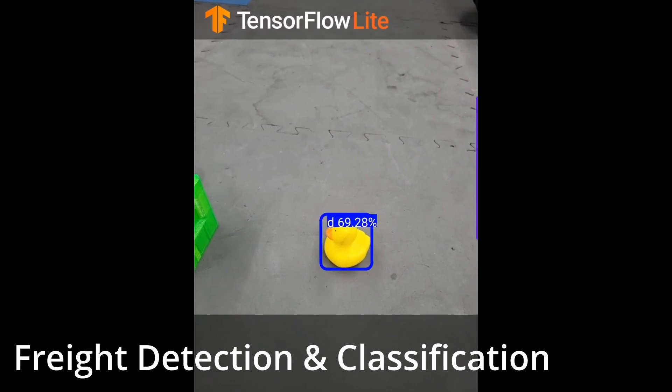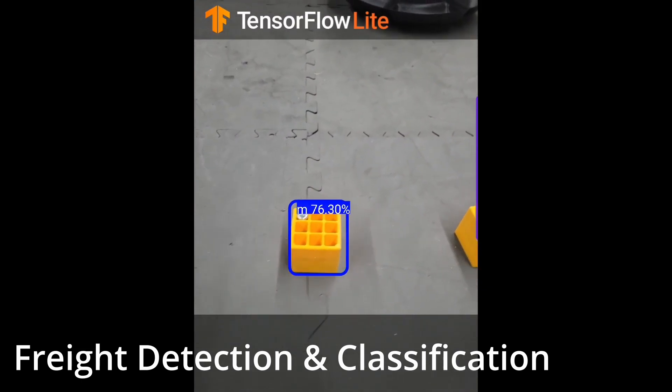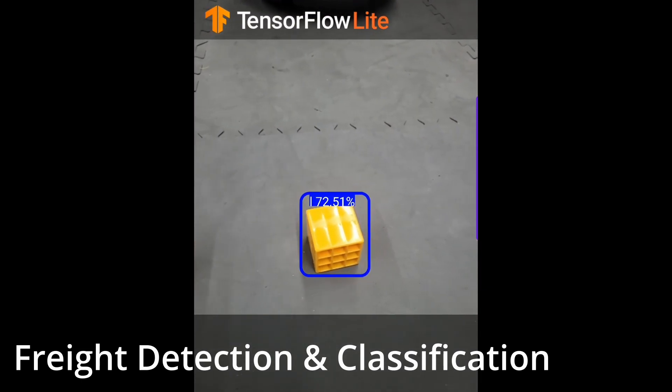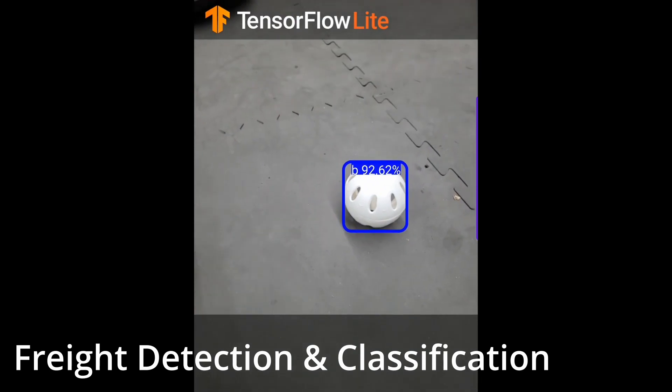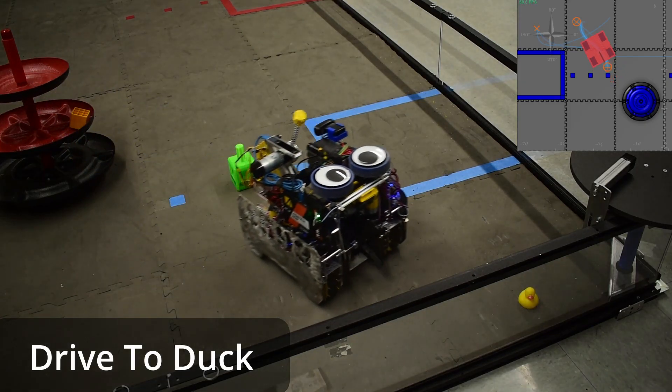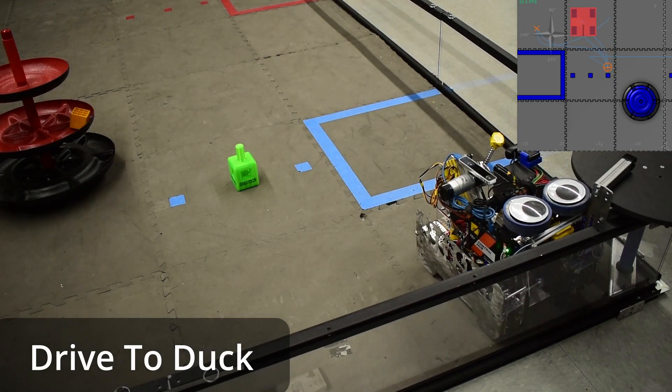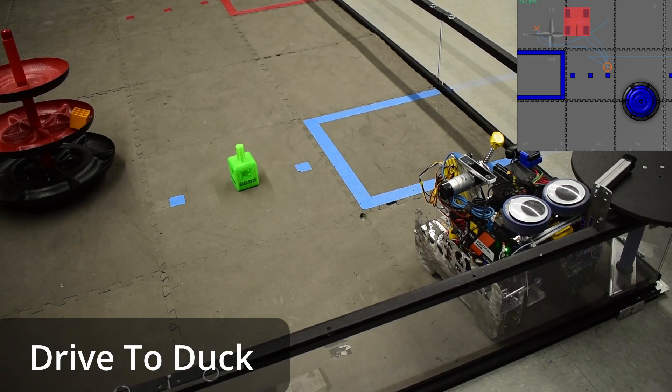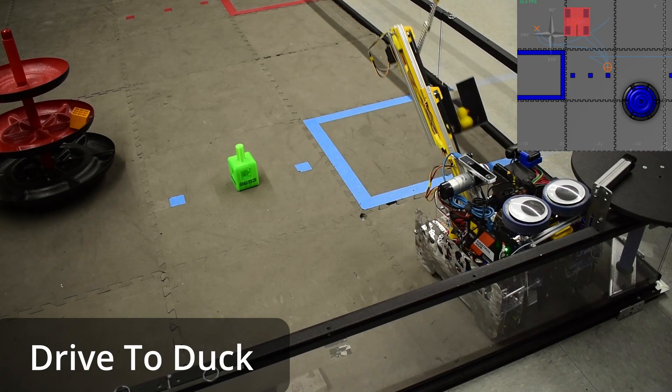By training a single-shot detection MobileNet model using TensorFlow, we're able to detect the different types of freight near the robot. We're able to determine the exact location of a piece of freight on the field by inverting the homography point projection equation.